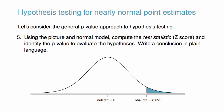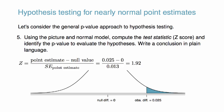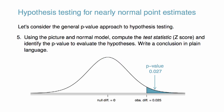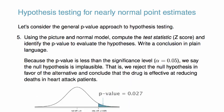Lastly, using the picture and normal model, compute the test statistic and identify the p-value to evaluate the hypotheses, then write a conclusion in plain language. We use statistical software to calculate the p-value in this example, but we could also have looked up the value in a table. Because the p-value is less than the significance level of alpha, which is 0.05 in this example, we say the null hypothesis is implausible. That is, we reject the null hypothesis in favor of the alternative and conclude that the drug is effective at reducing deaths in heart attack patients.